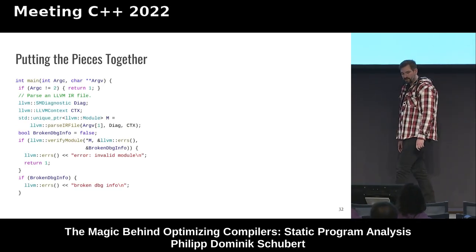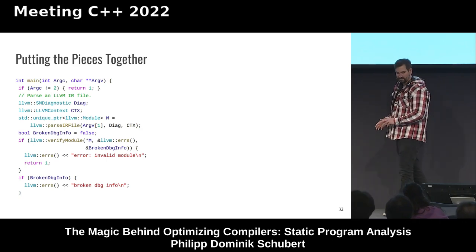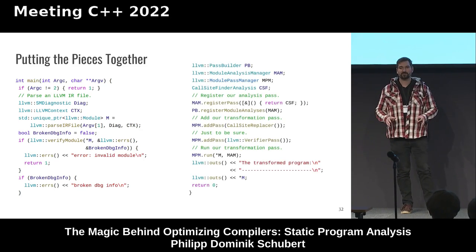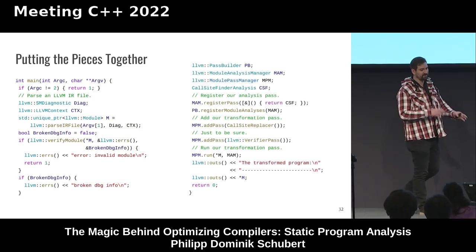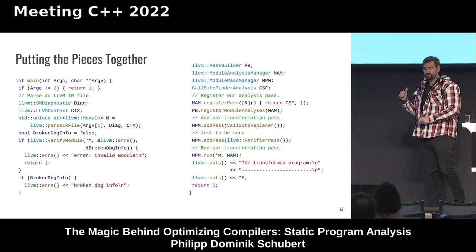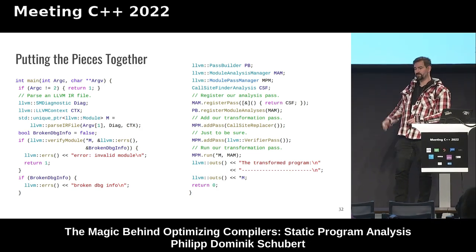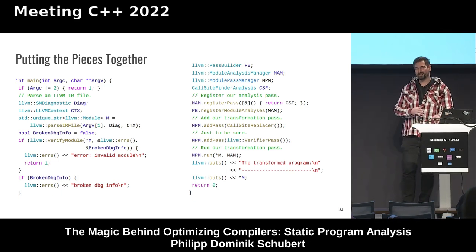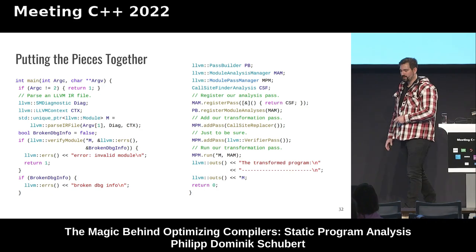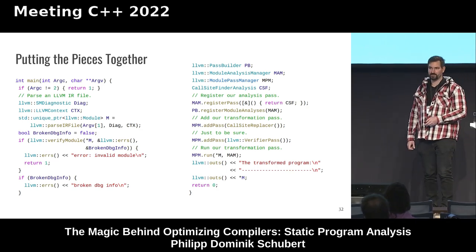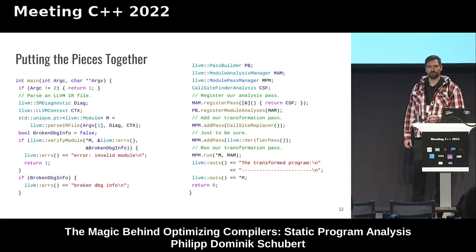Putting the pieces together: pass a module you wish to modify, set up pass infrastructure — pass builder, module analysis manager — register your analysis, register your transformation pass (the call site replacer), optionally add a verifier at the end to ensure nothing got messed up, apply and run the infrastructure on the target module, then print the modified module to the command line.